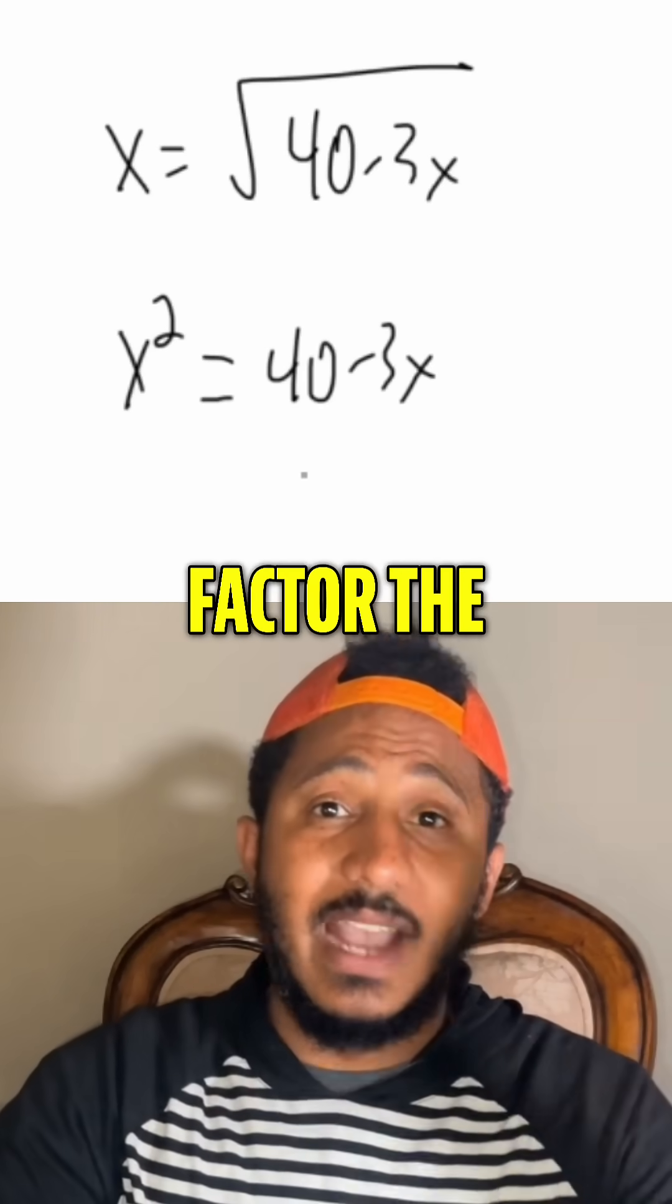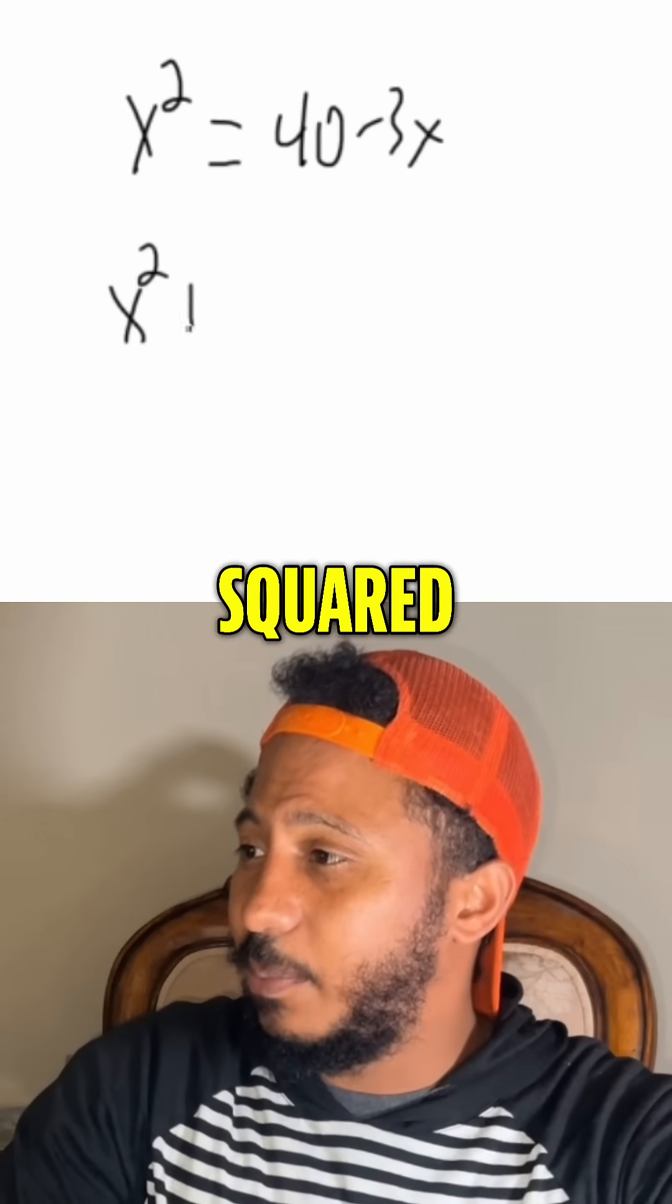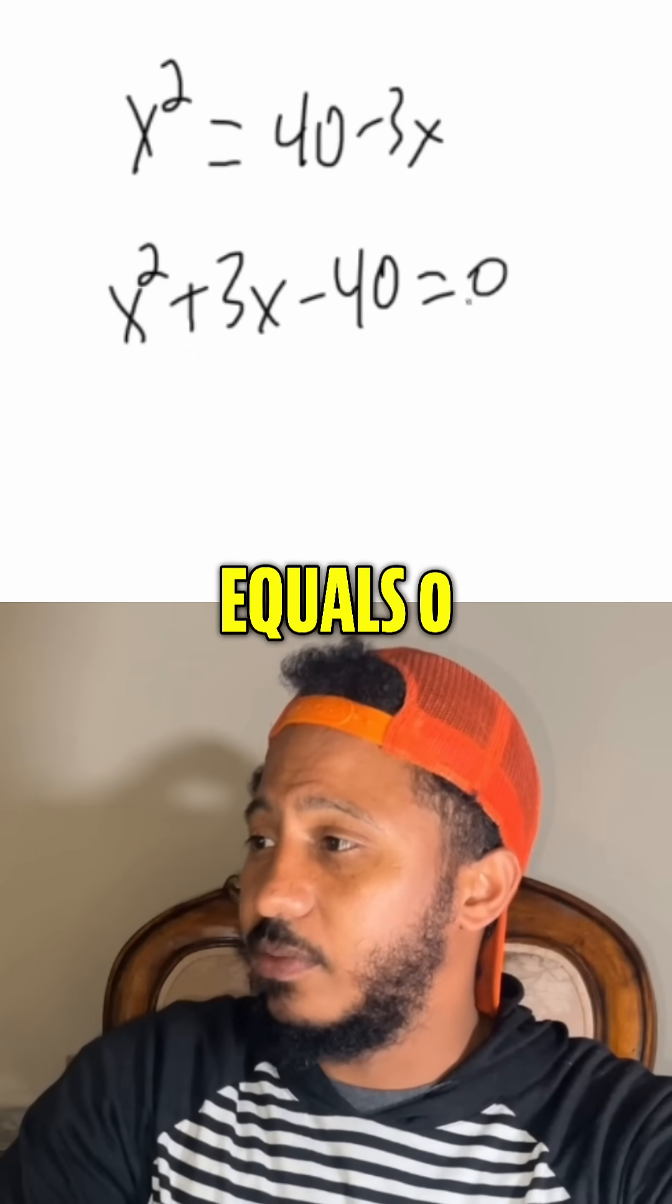And now we get 0 on one side. Factor the other side. Set each factor equal to 0. So here that would go as x squared plus 3x minus 40 equals 0.